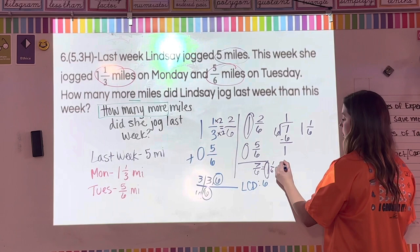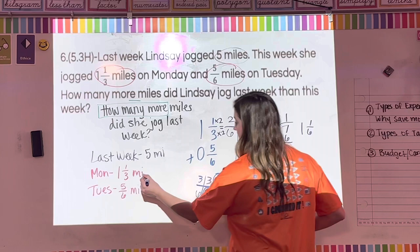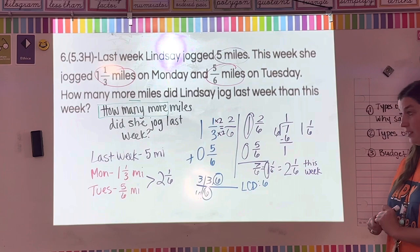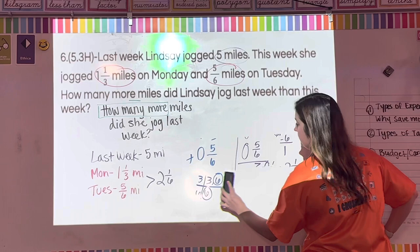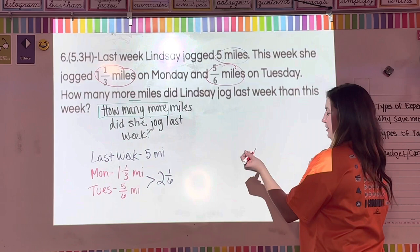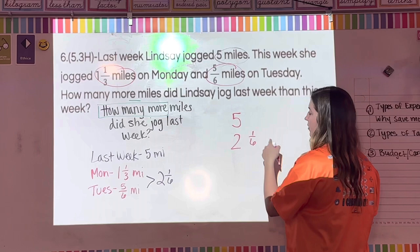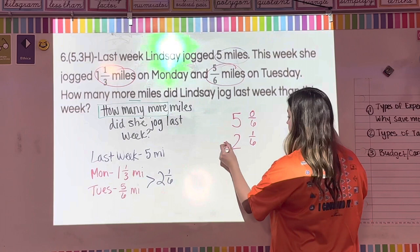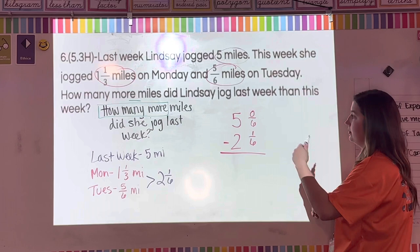Now I subtract: five miles minus two and one-sixth. I write five as four and six-sixths, since I need to borrow. Zero-sixths minus one-sixth doesn't work, so five becomes four, and I add six-sixths to the fraction part. Now: six-sixths minus one-sixth equals five-sixths. Four minus two equals two.